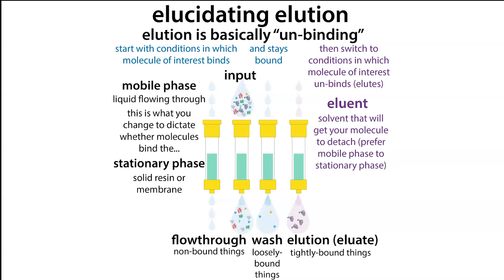The solvent we use to get our molecule to come out of the stationary phase is called the eluent. The liquid that comes out containing our molecule of interest is going to be our eluate, although typically we often just refer to this as our elution.